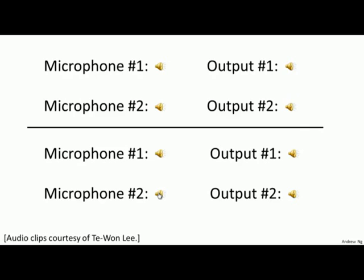[One, two, three, four, five, six, seven, eight, nine, ten.] So that wasn't perfect. It got the voice, but it also got a little bit of the music in there. Then here's the second output of the algorithm.